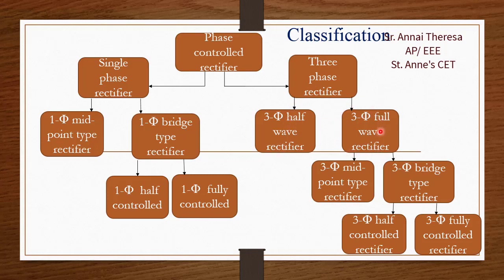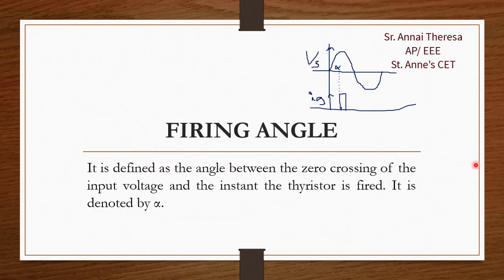The three-phase full-wave rectifier is further classified into three-phase midpoint type and three-phase bridge type. The three-phase bridge type is classified into three-phase half-controlled and three-phase fully controlled. The three-phase half-controlled rectifier is called the three-phase semi-converter, just as the single-phase half-controlled is called the single-phase semi-converter.